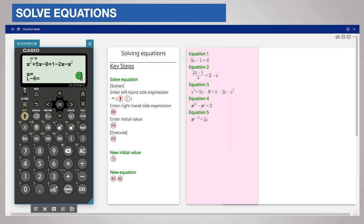You can check for other solutions by using a different initial value. Press back and enter your new initial value, for example negative 10. Choose execute and the calculator displays the second solution x is equal to negative 4.5.